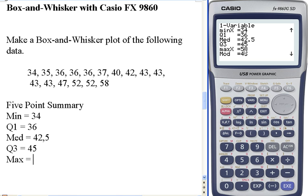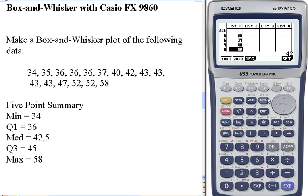Okay, that's our five point summary. Those five numbers are used to make our box and whisker plot. Let's go back to our menu, exit, exit, and now I want to graph this data.